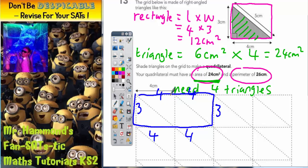4, 4, 4, and 4 is 16. Plus 3 is 19. Plus 3 is 22. That's no good, because we want it to be 26. So we're going to have to go back to the drawing board.